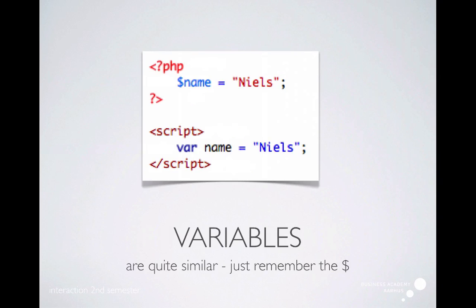Let's have a look at some variables. They are quite the same but a little bit different. In JavaScript, we use the word 'var' in front of the variable to indicate that it is a variable, and we use the equal sign to specify the value. The same thing we do in PHP, except that all variables have a dollar sign in front.